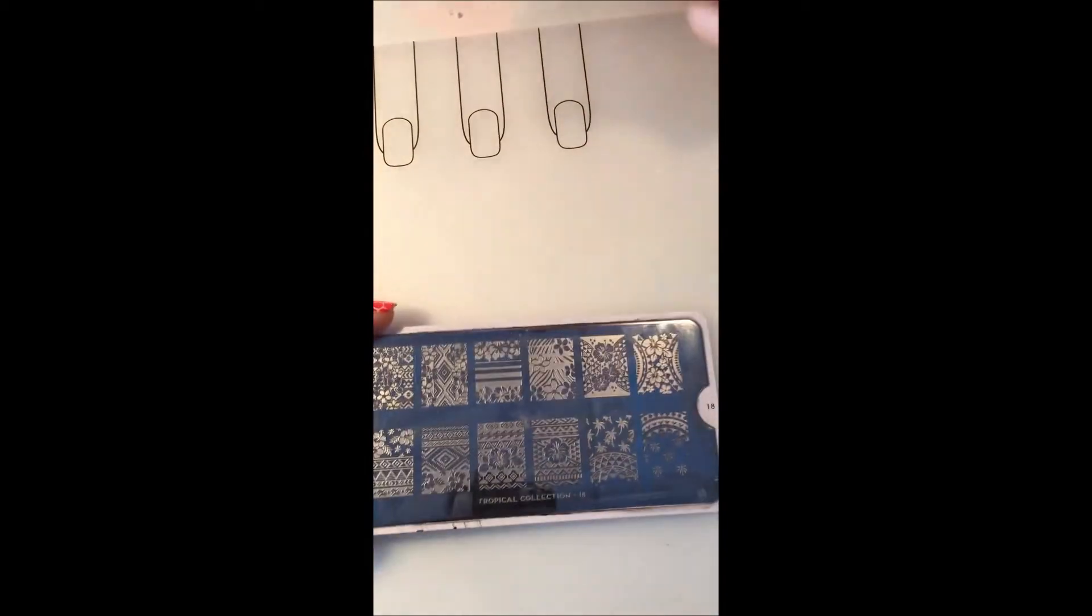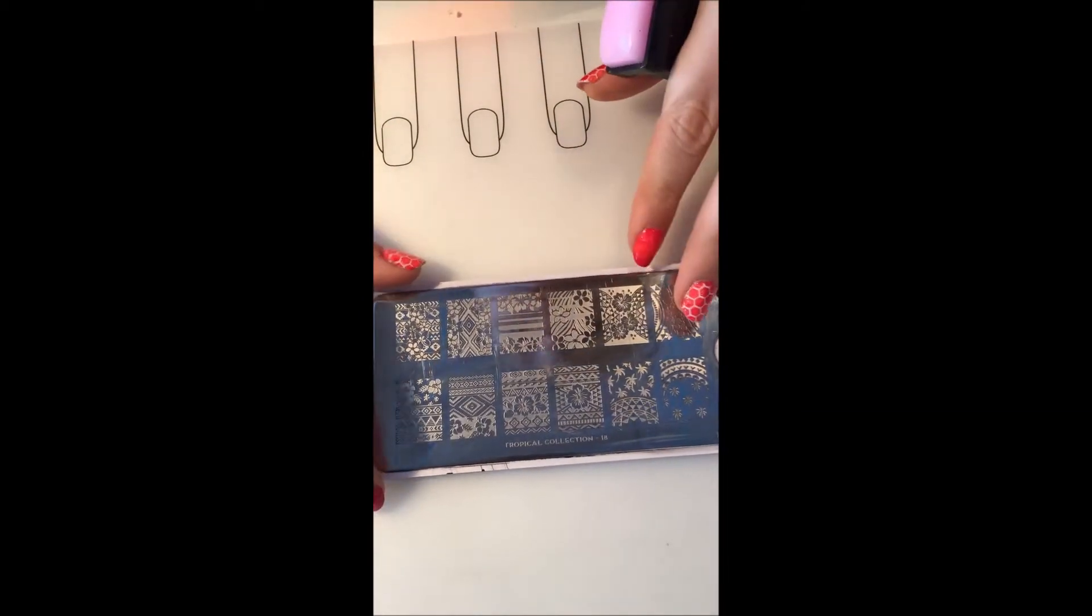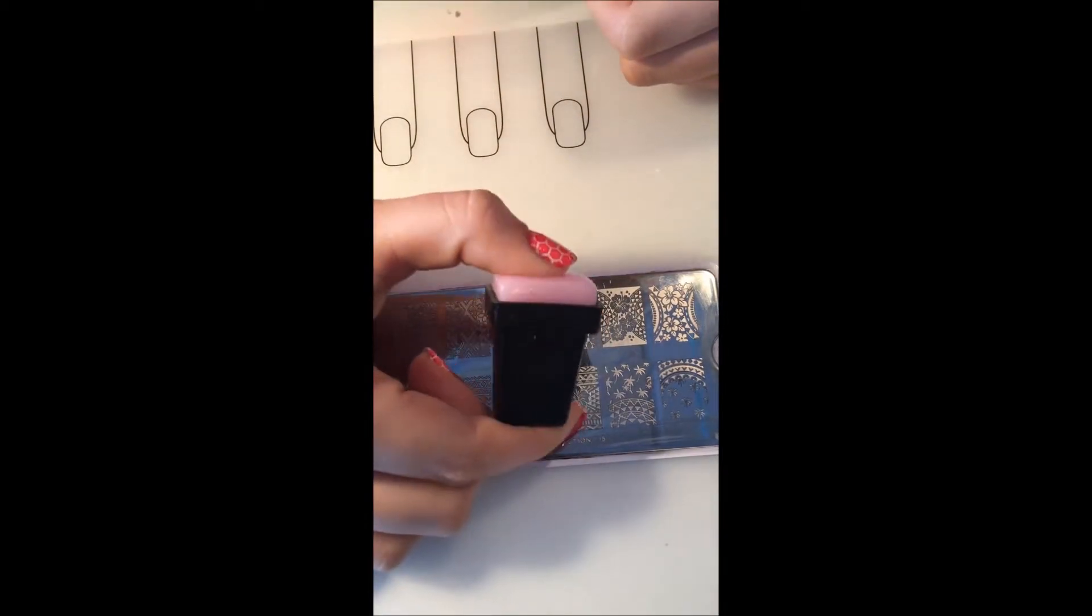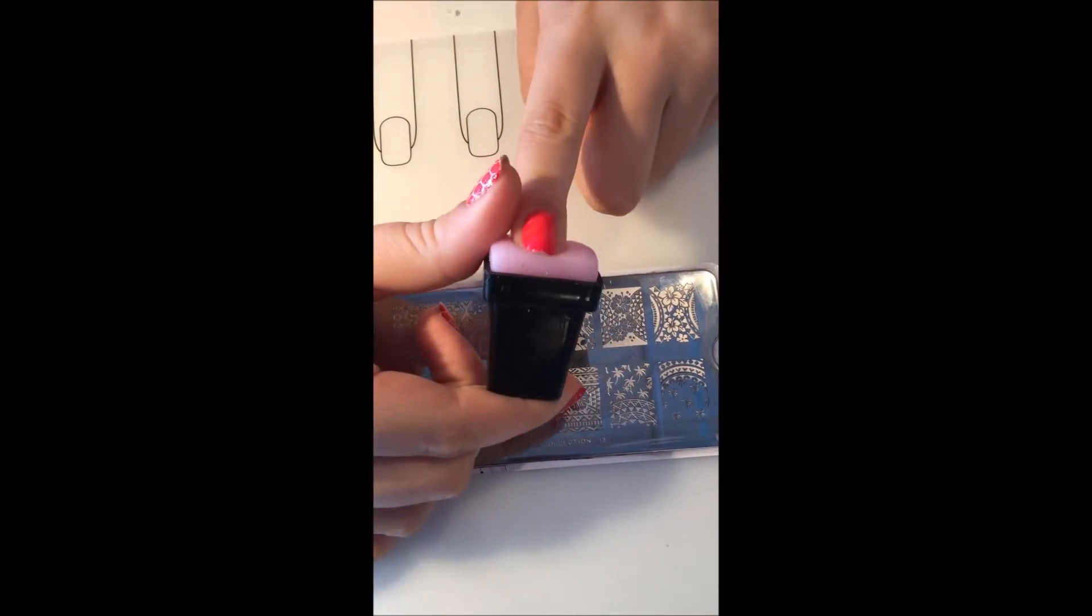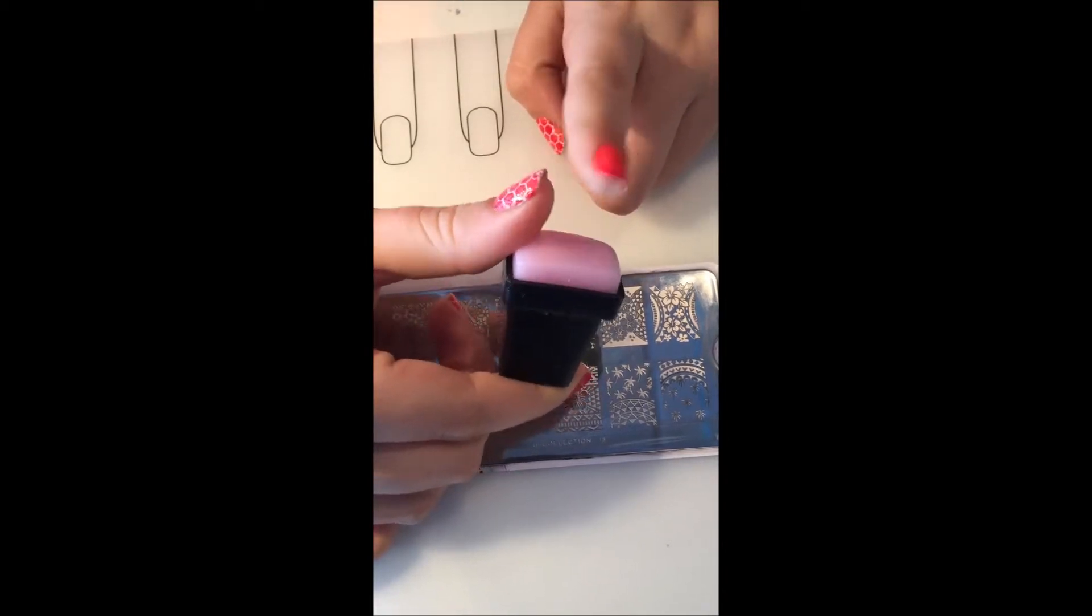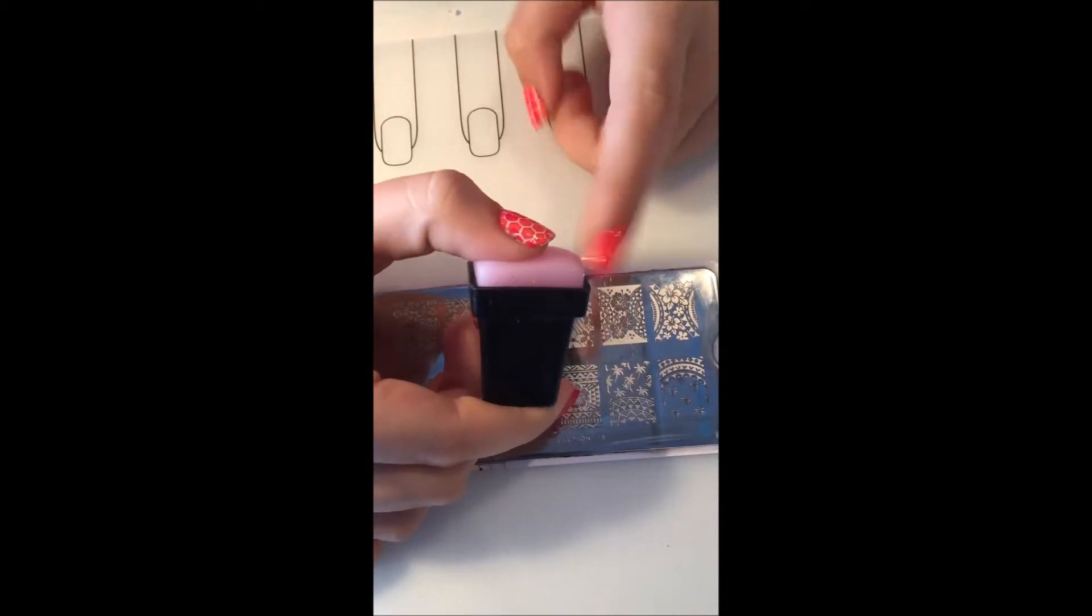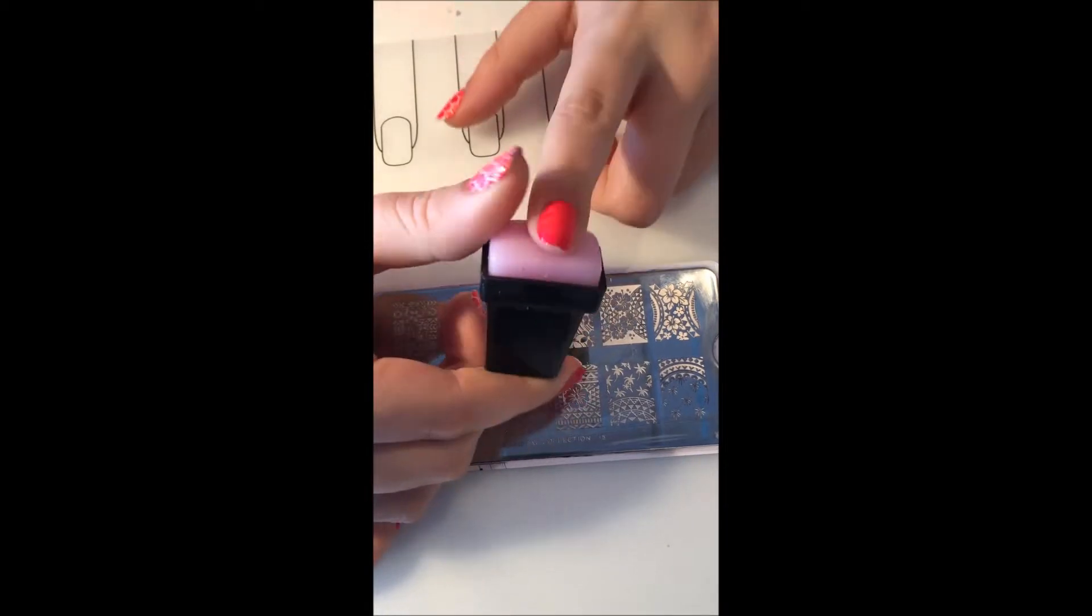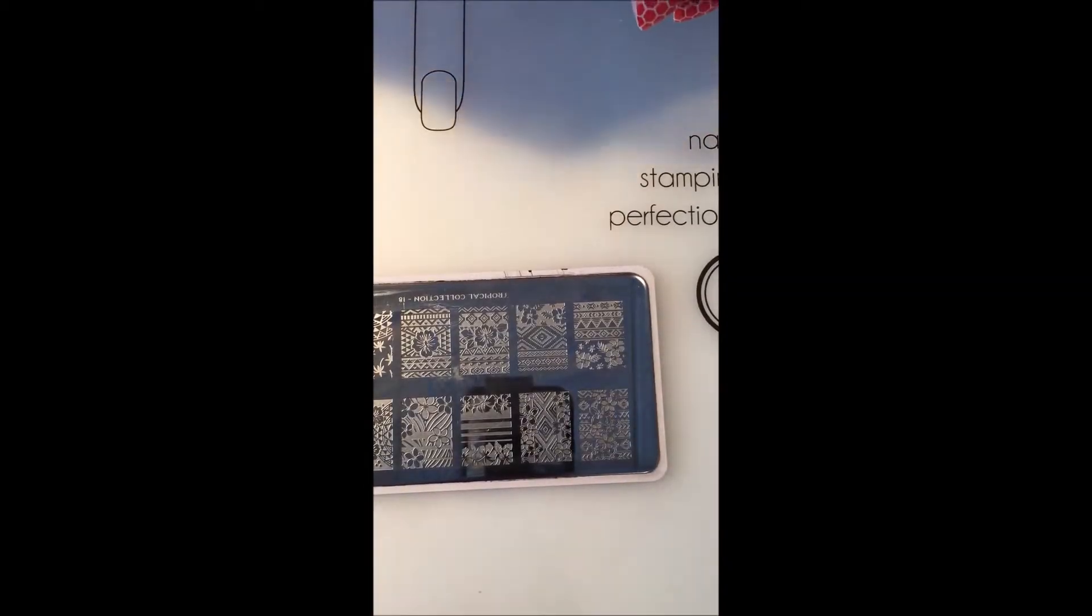For the stamping, I'm going to be using Moyou London's Tropical Collection plate number 18 and my Winstonia jelly stamper. If you want to see how these work, I have a video on my channel called Winstonia Stamper Review. I'm going to stamp on the image.